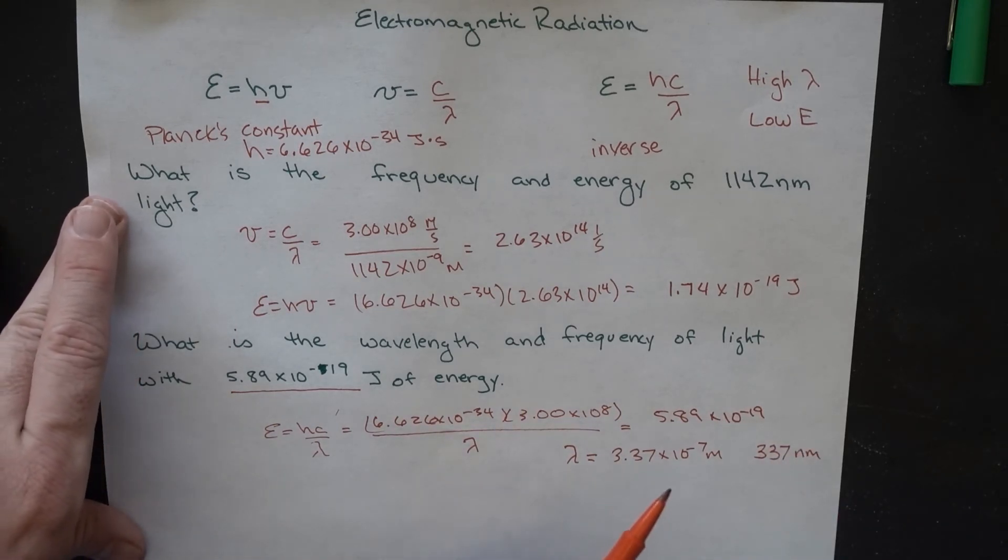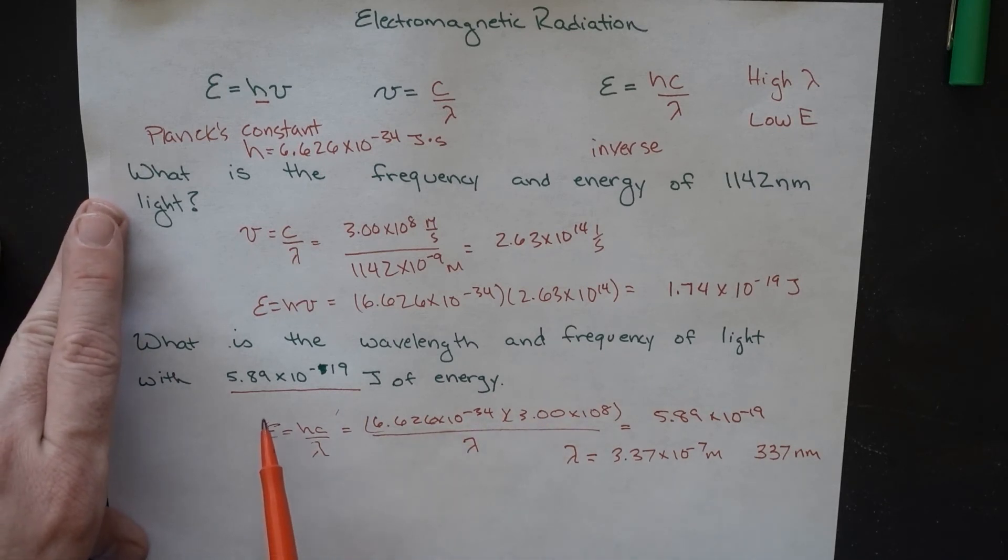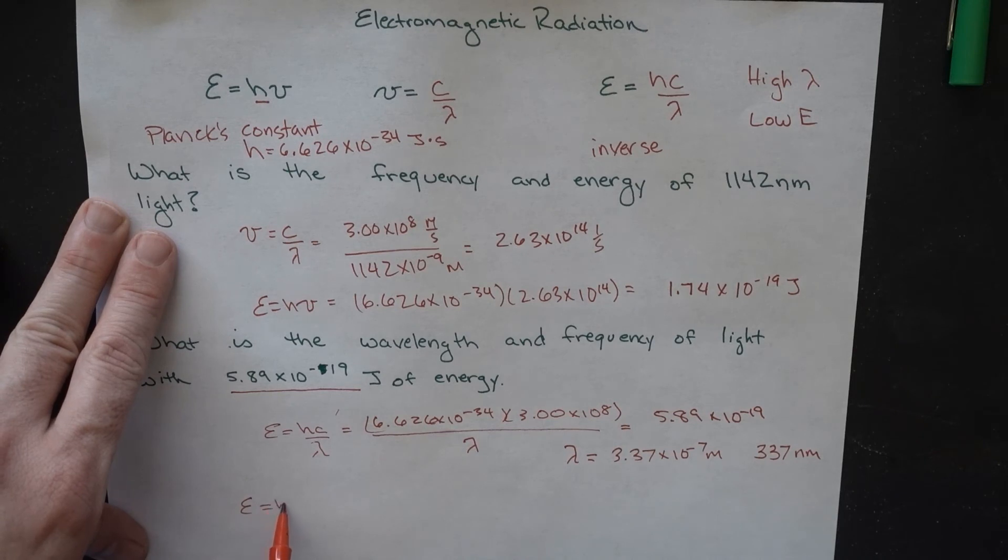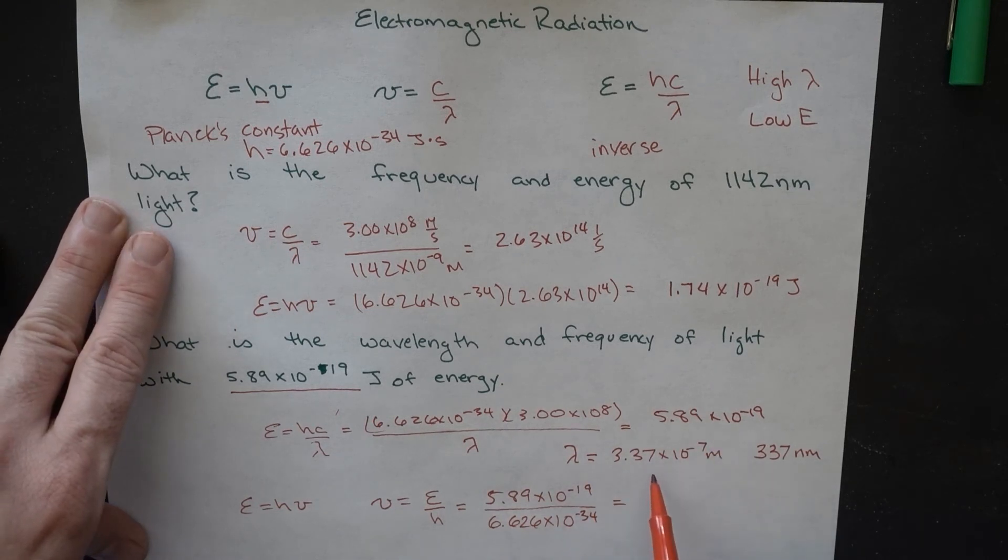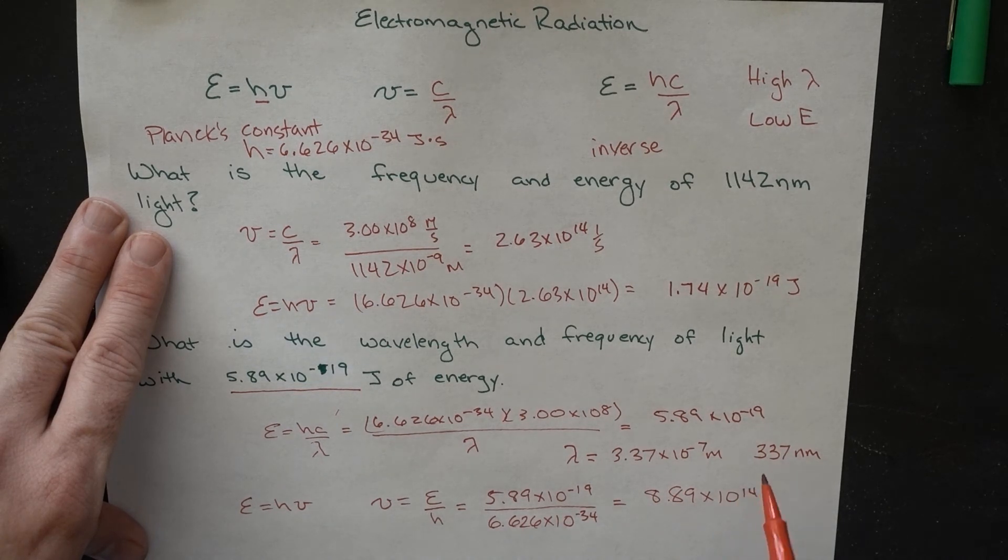Once we have that wavelength, we can also get its frequency, but we can use our original equation, which is always a good idea, to figure it out. Energy equals H times nu. So, nu is equal to energy divided by H. So, 5.89 times 10 to the minus 19 over 6.626 times 10 to the minus 34. And that will give us a frequency, 8.89 times 10 to the 14th.